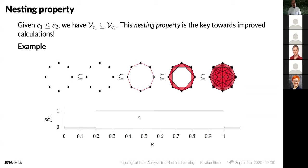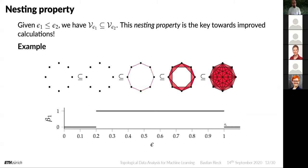Showing the Betti calculations for all these thresholds: at some point the Betti number will remain for a while — we have this hole — and at some point everything is closed and then it goes down. This idea of the nesting relationship leads us to something called a filtration.